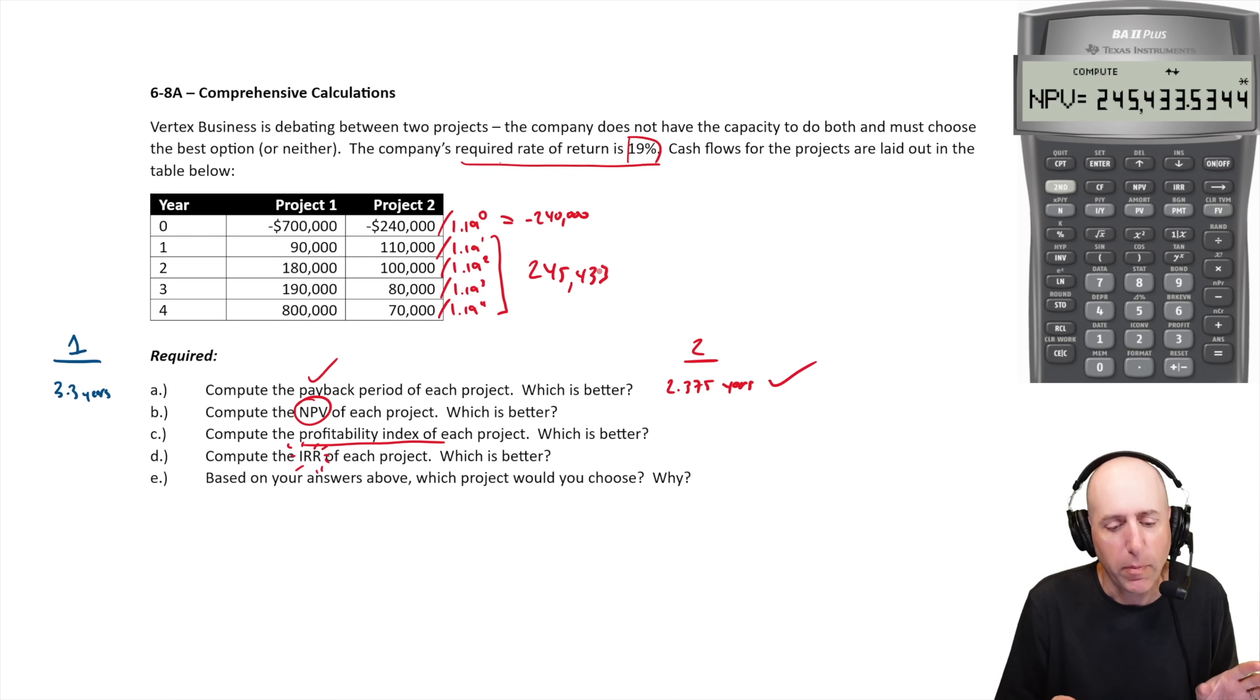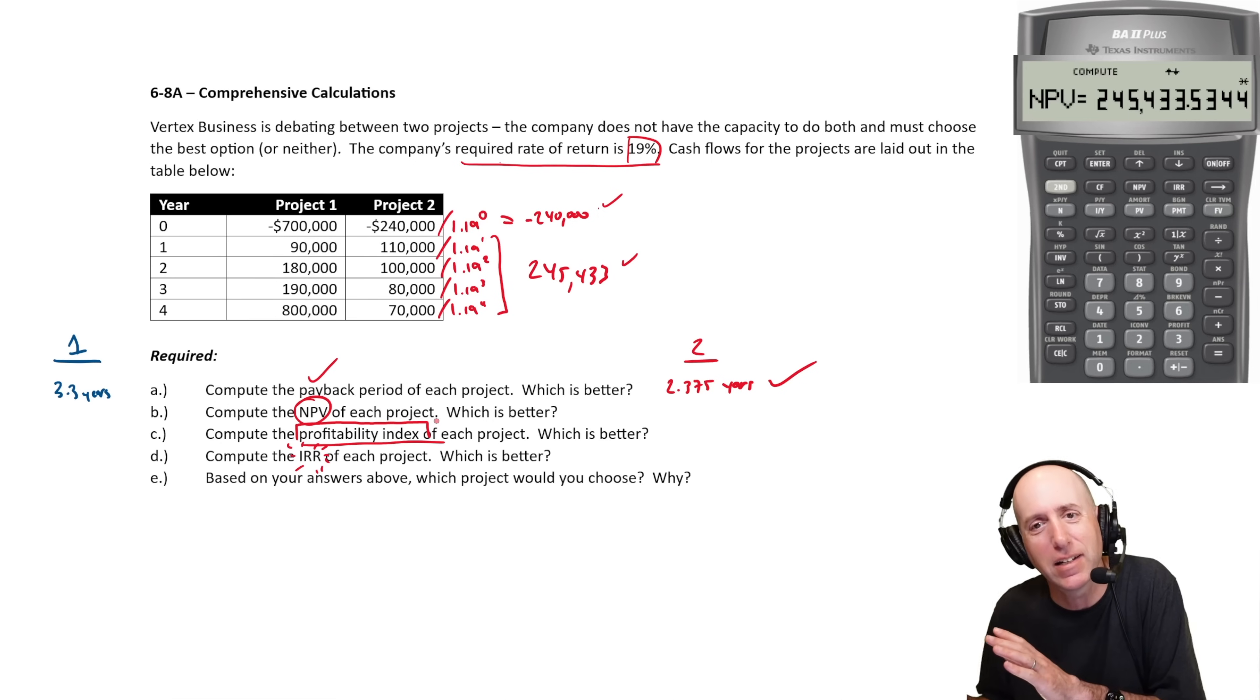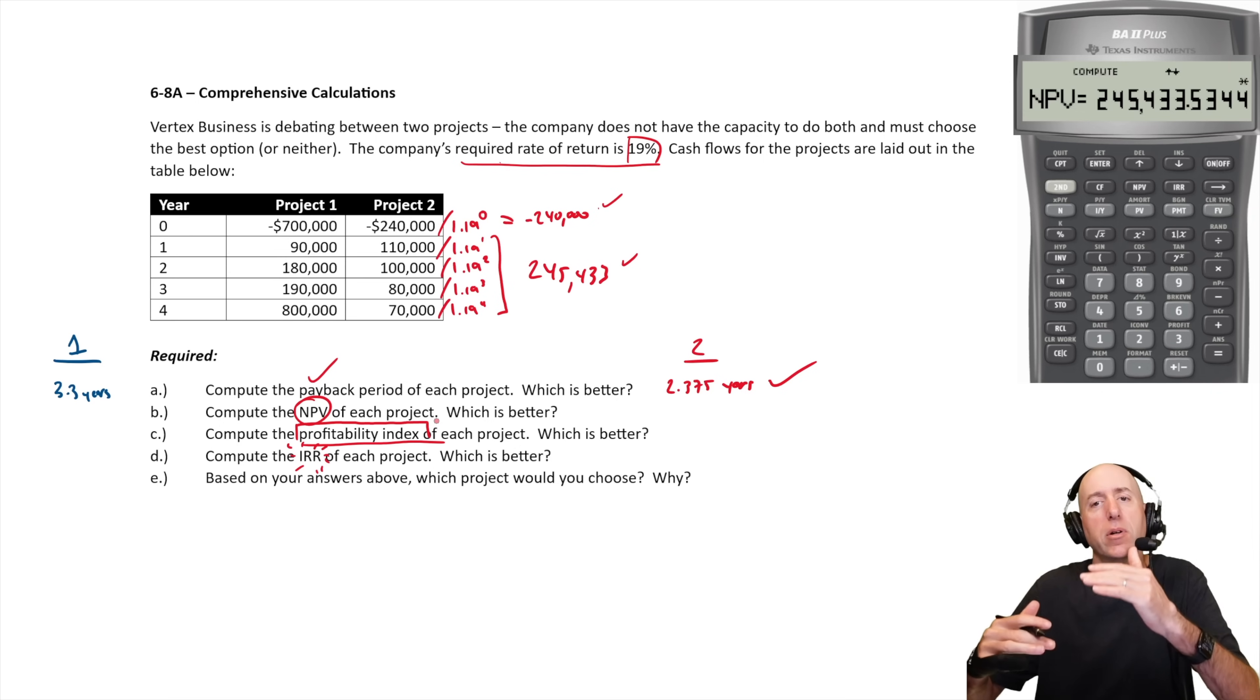Now again, you could have done this by hand and you could do it all in one step. The reason I've separated into two steps is having the inflow and the outflow is really useful for profitability index. So I'm sort of thinking ahead to part C. You could have put all the numbers in here and NPV'd it. And you would have got 245 minus 240, you would have got 5,433, which is our net present value, 5,434. So this is a four because I should have rounded up. 5,434 is our net present value of the project. The present value of the cash inflows minus the present value of the cash outflows.